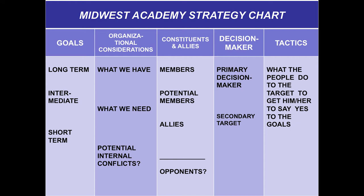Here is the Midwest Academy strategy chart. It is in five columns, and I'm going to go through each one individually. They're wired together like a spreadsheet — if you change something in one, it changes all the way across. This is a simple but also very deep way to plan out a power analysis in an issue campaign. This has been used to stop George Bush from privatizing Social Security, and we also figured out how to get better school lunches. Simple, but also deep.